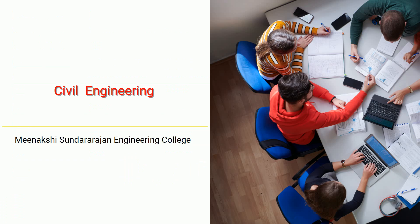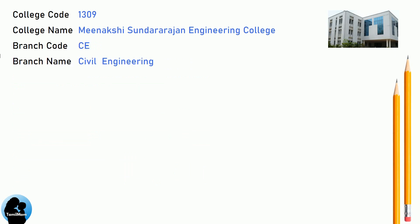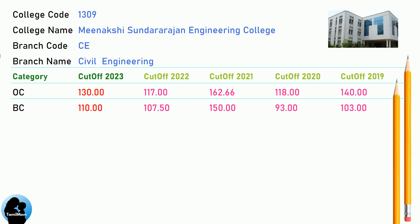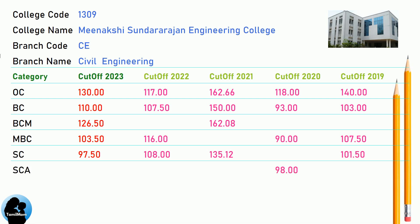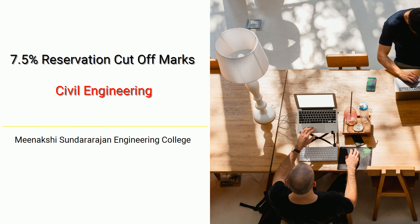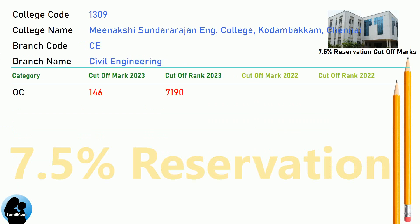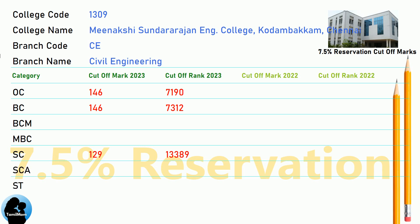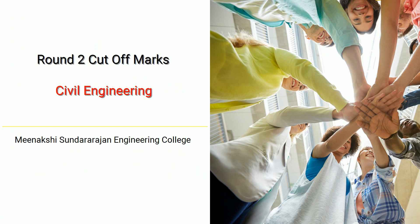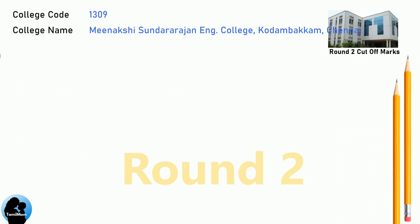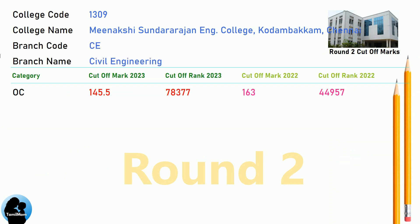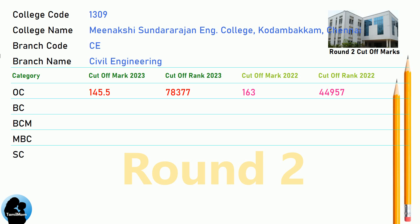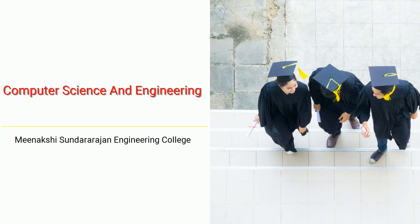DNA Cut-Off for Meenakshi Sundararajan Engineering College in Civil Engineering. DNA 7.5 Reservation Cut-Off for Meenakshi Sundararajan Engineering College in Civil Engineering. DNA Round 2 Cut-Off for Meenakshi Sundararajan Engineering College in Civil Engineering.